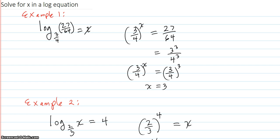Solve for x in a log equation. This one is log base 3/4 of 27/64 equals x. So x is the answer to the whole log. X is the exponent that you put on 3/4 to get 27/64.